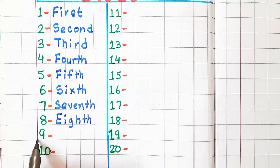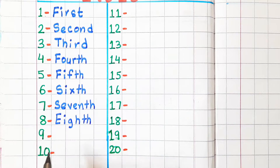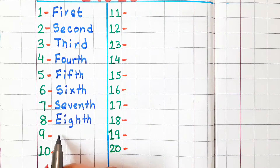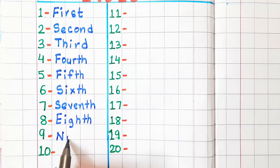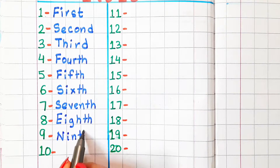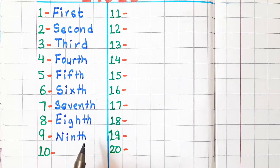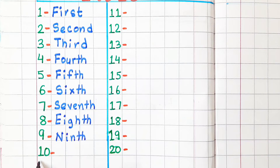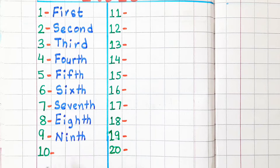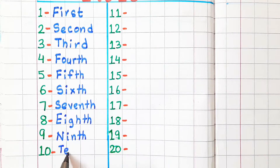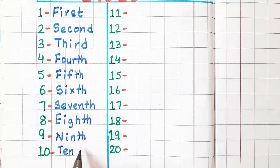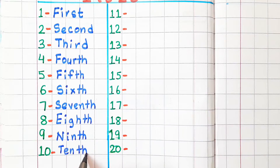9 — in ordinal number, it is called ninth. Spelling is N-I-N-T-H. 10 — in ordinal number, it is called tenth and the spelling is T-E-N-T-H.